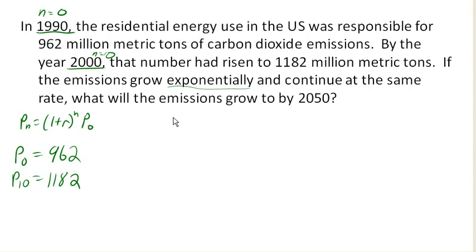So we know that P10 is supposed to be 1 plus R to the 10 times P0, based on our explicit model. But we already know what P0 is. We already know that P0 is 962. Likewise, we already know what value P10 takes on. P10 is supposed to be 1182. And so that leaves us an equation where the only thing left to find is R.